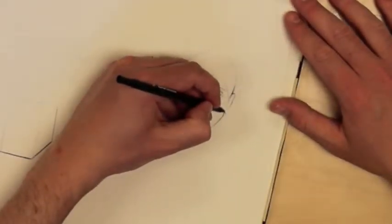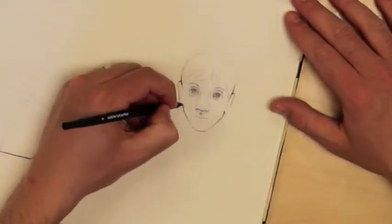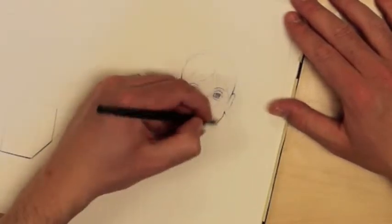But the technique is that you start with your pencil in the dark areas, press down, and then very quickly kind of pull out your color.